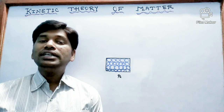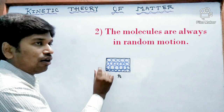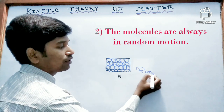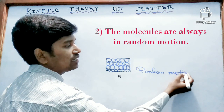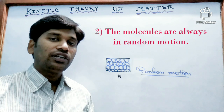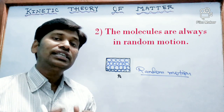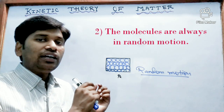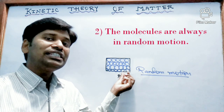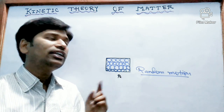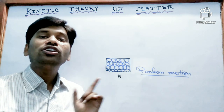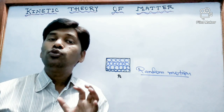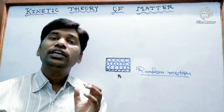The second assumption is the molecules are always in random motion. These molecules always move. Another name of this is Brownian motion or zigzag motion — the particles of the molecules are always in random motion. In case of solid, the molecules are not moving freely; they are vibrating on their own position. In case of liquid, the molecules can move freely but they cannot escape the liquid. And in case of gas, the molecules can move in any direction with any possible velocity.